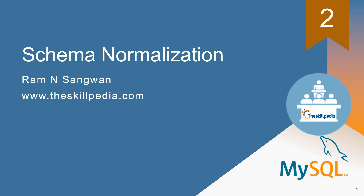Hello and welcome to session 2 of MySQL DBA. We are doing two lectures on prerequisites. The first was DBMS — database management system — where we discussed the 12 rules given by Dr. Codd. This session covers another prerequisite: schema normalization. When any company hires you as a MySQL DBA, the first thing you need to understand is the data which is to be implemented in MySQL. My name is Ram and the portal is skillpedia.com where the entire course is available.